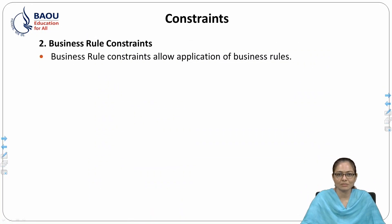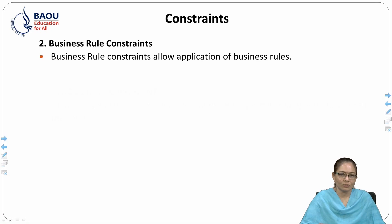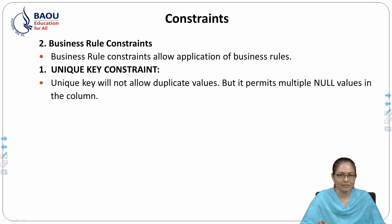The next type is the business rules constraint. Business rules constraints allow the application of business rules — they define all the rules a particular organization needs and create objects using the check constraint. The business manager determines or decides the business rules, which are applied to data when it is being inserted into table columns. Business rules constraints include: unique key constraint, not null constraint, check constraint, and default constraint.